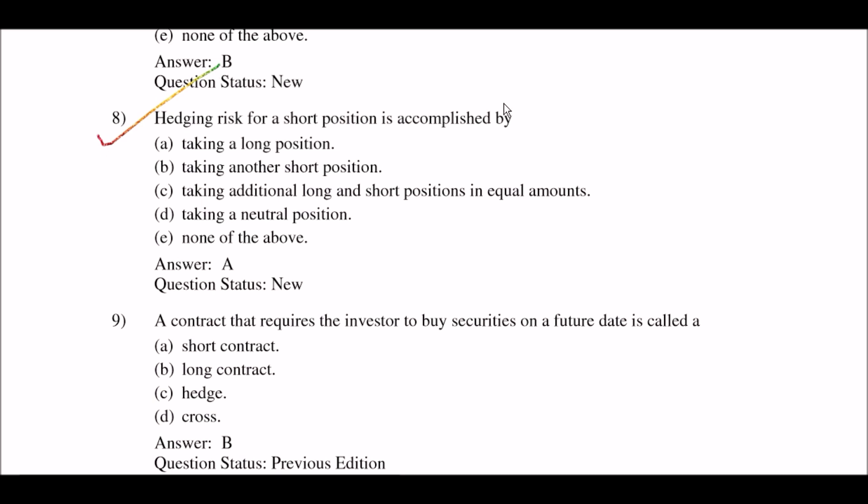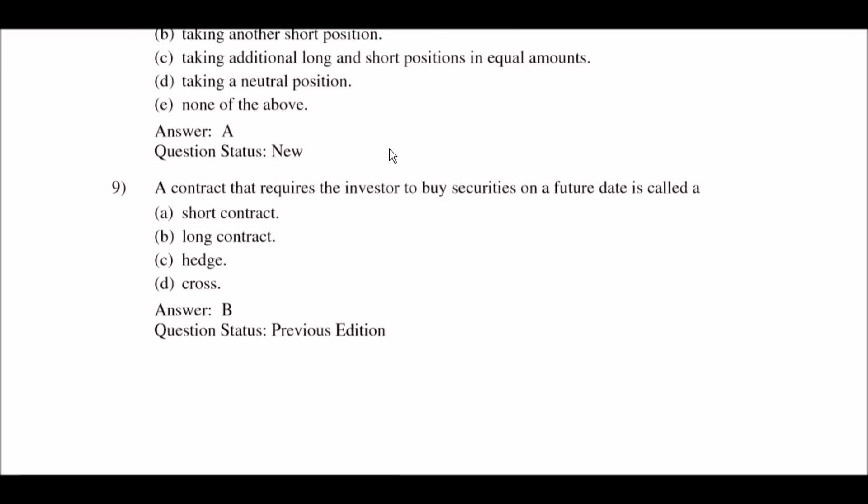Next question: hedging risk for a short position is accomplished by — option A: taking a long position; option B: taking another short position; option C: taking additional long and short positions in equal amounts; option D: taking a neutral position; option E: none of the above. The right answer is option A: taking a long position.